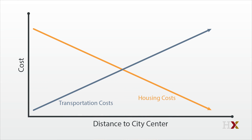What determines the intercept of the housing cost curve? The price of land at the edge of the city, where the land is presumably used for farming. This is the Alonzo-Muth-Mills model, justly famous throughout urban economics. In this form, it merely predicts that housing costs will decline with distance from the city in a way that perfectly offsets commuting costs.